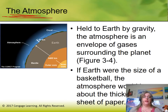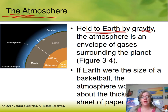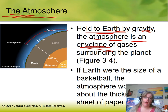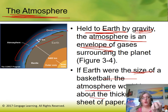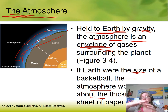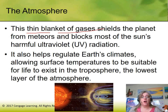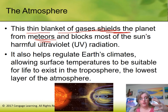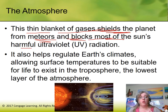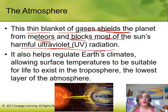The atmosphere is the second sphere — held onto earth by the gravity of the geosphere. It is an envelope of gases surrounding the planet. If the earth were the size of a basketball, the atmosphere would only be about as thick as a sheet of paper. This thin blanket of gases shields the planet from meteors — they burn up in the atmosphere — and blocks most of the sun's harmful ultraviolet radiation.